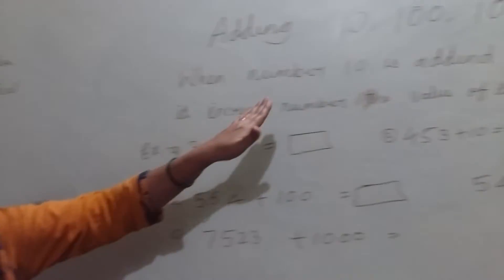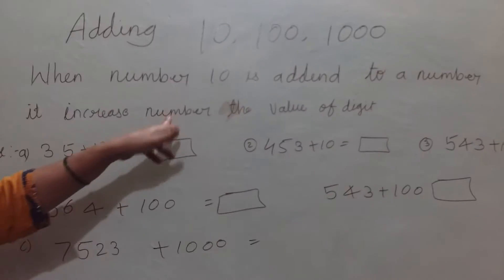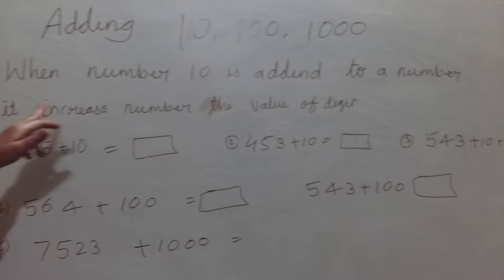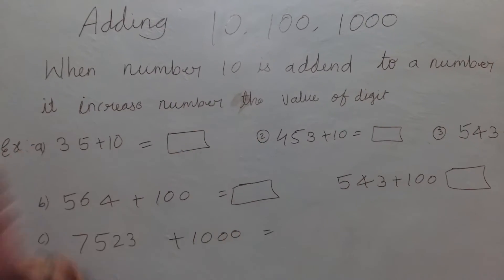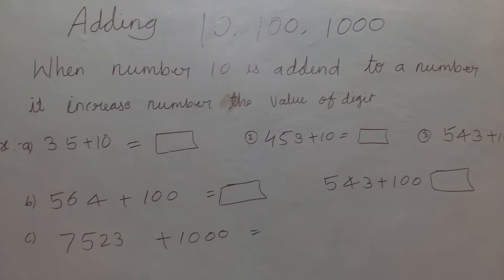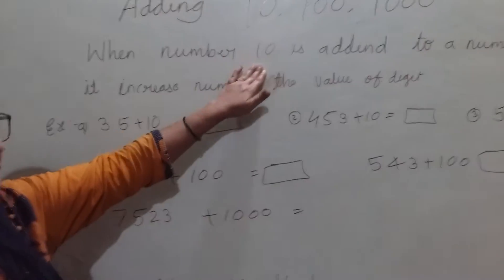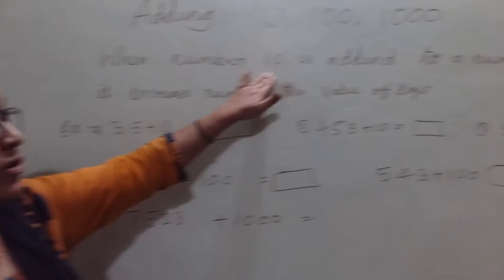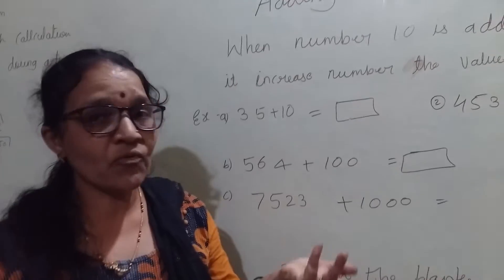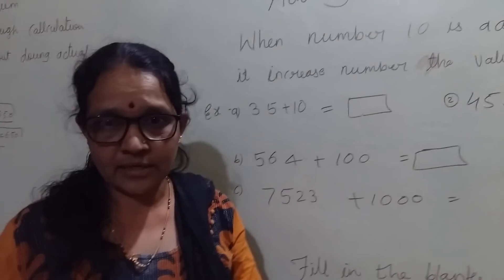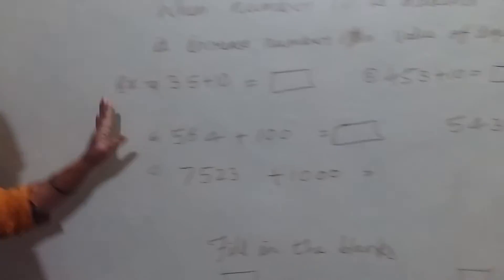When number 10 is added to a number, it increases the value of the digit — not only 10. Even if you take the hundred or thousand, when you add it to a number, it increases the value of a digit. Now see here some examples.